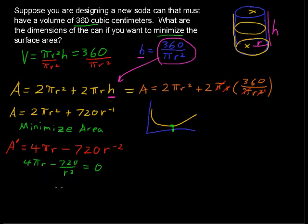And solving for r, I'm going to cut to the chase here, you can multiply each side by r squared, and multiply everything by r squared, you get 4 pi r to the third minus 720. And that will give you, in the end, r is approximately equal to, you'd have to take the cube root then to solve, but r is approximately equal to 3.855 centimeters.